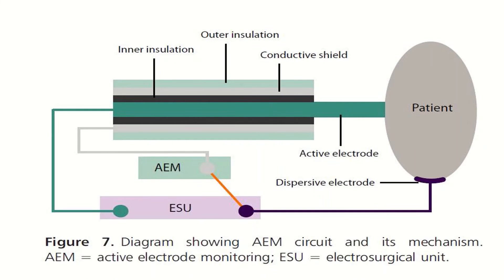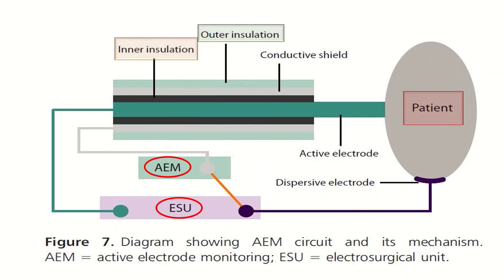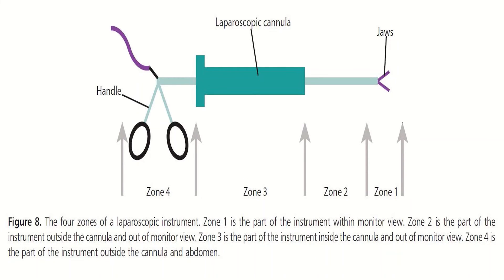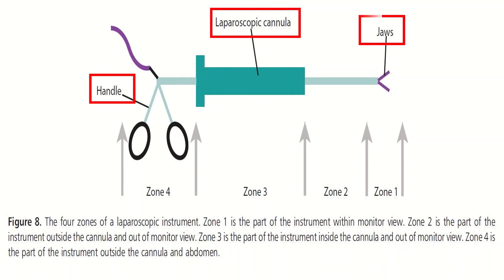A figure shows active electrode monitoring and the electrosurgical unit, with the patient and components including the inner insulation, outer insulation, conductive shield, active electrode, and dispersive electrode. Another figure shows the four zones of laparoscopic instruments: Zone 1 is the part of the instrument within the monitor view; Zone 2 is outside the cannula and out of monitor view; Zone 3 is inside the cannula and out of monitor view; Zone 4 is outside the cannula and the abdomen.